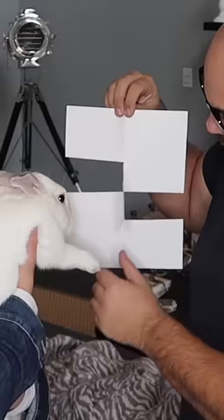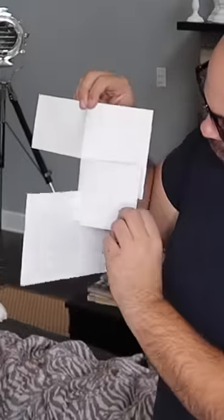This is the magic impossible paper trick Ava. So look at this paper. You can see it has a flap right here in the middle.